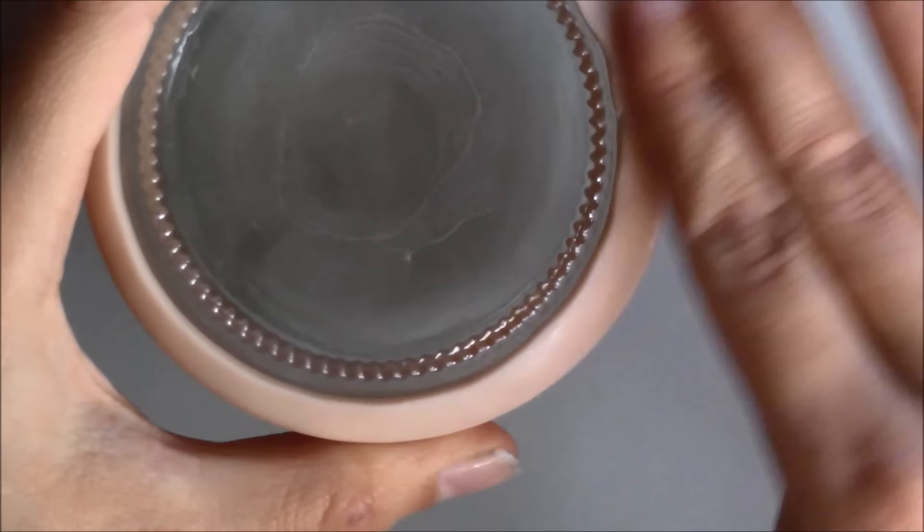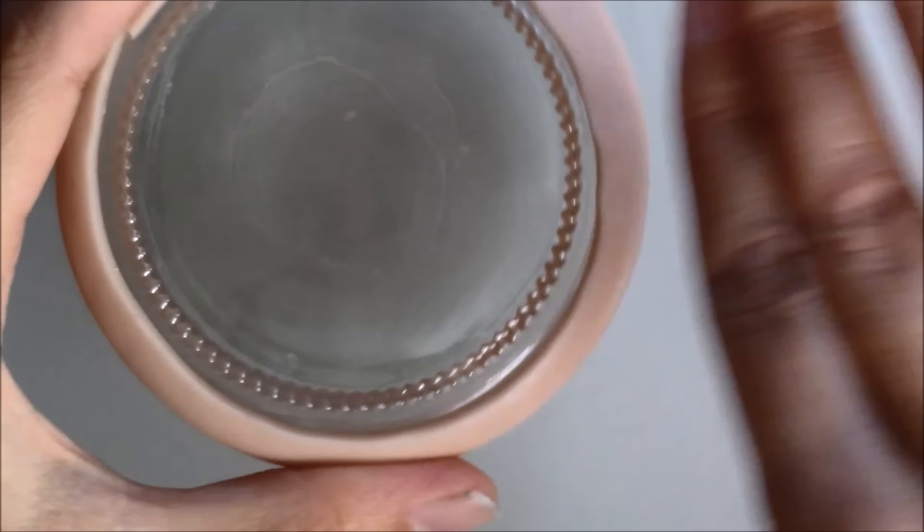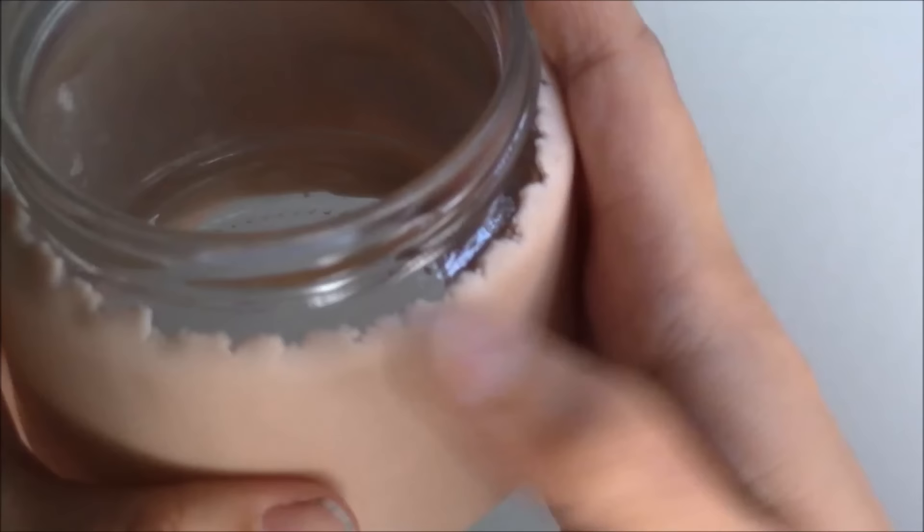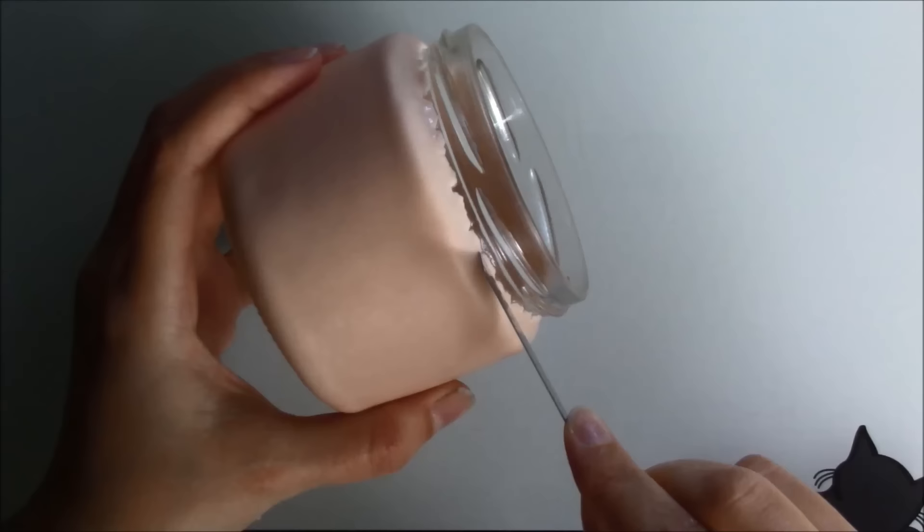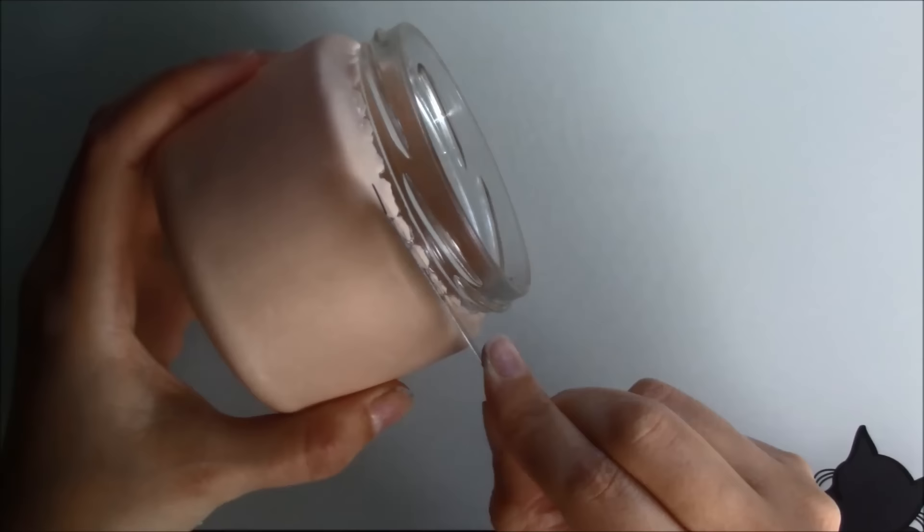Press the clay onto the jar and ensure there are no air bubbles. Blend away the joint as well. Next I trimmed the top edge to make it neater.